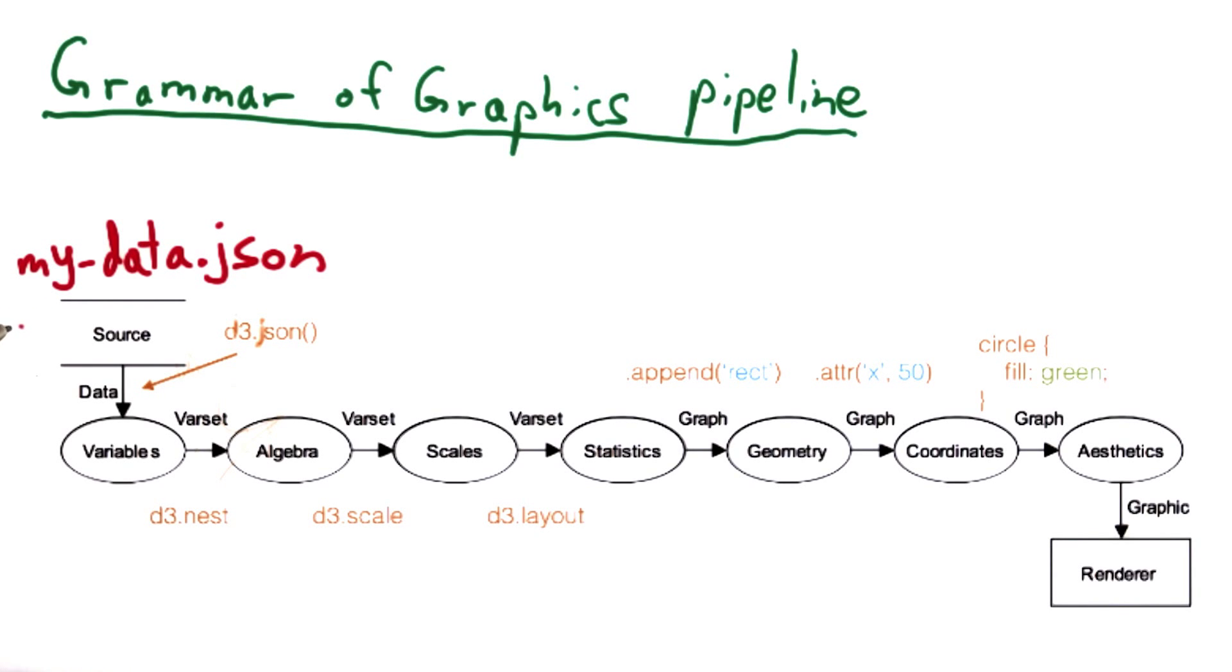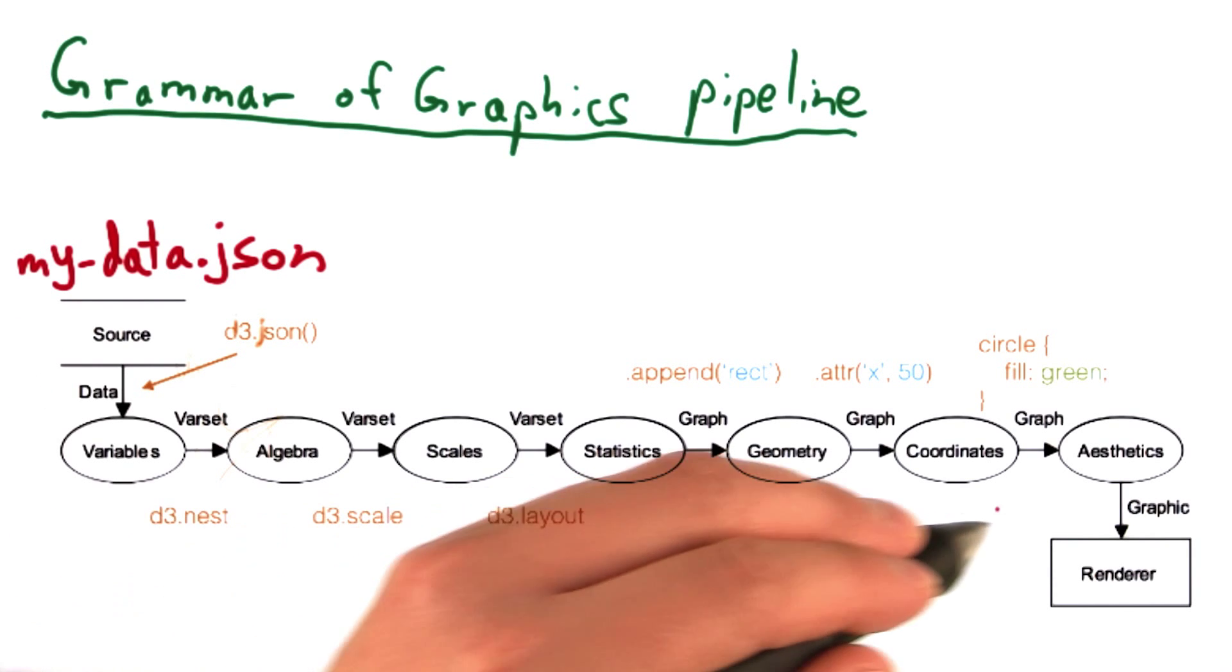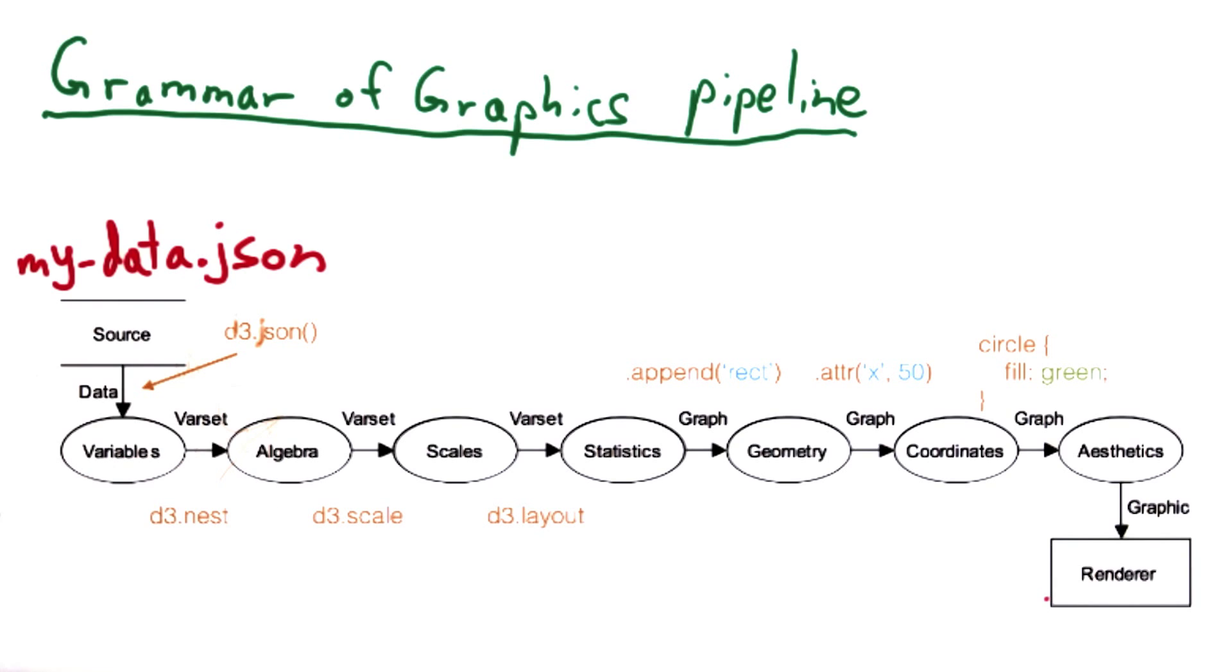On the left side here, we have a box labeled source, which we can think of as a raw data file, maybe a CSV, or in this case, a JSON file called myData.json. As we go through the pipeline of the grammar of graphics, we can think of it as applying a different transformation to each step,